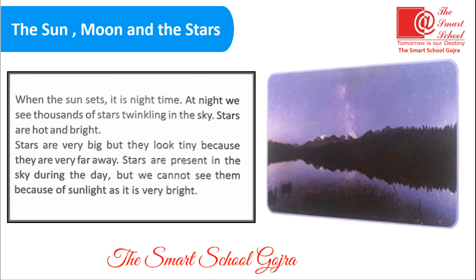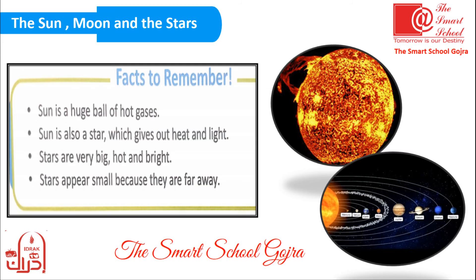Stars are very big but they look tiny because they are very far away. (Sitare bohut bade hote hain lekin woh hume chhote dikhai dete hain, kyunki wo humse bohut door hain.) Stars are present in the sky during the day too, but we cannot see them because of the sunlight — it is very bright. (Sitare asman par din ke waqt bhi mojood hote hain lekin hum unhe dekh nahi sakte, ki wajah suraj ki tez roshni hai.)